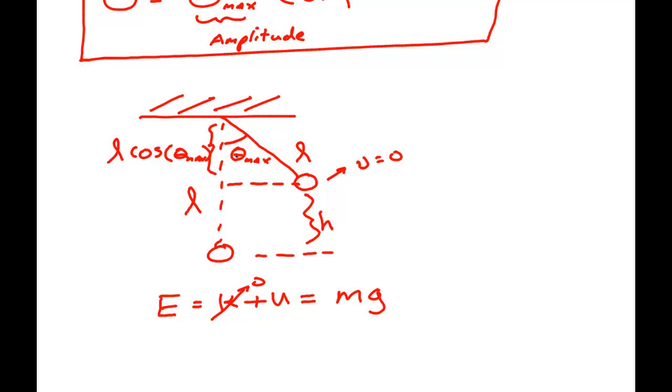But what is that distance? That's this distance L minus this distance, which is L cosine theta. Factor out the L. You get one minus cosine theta max.